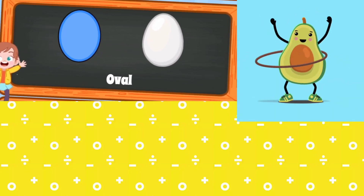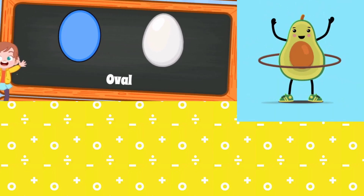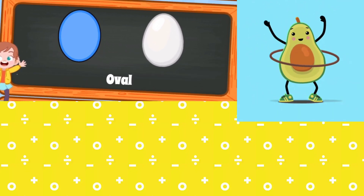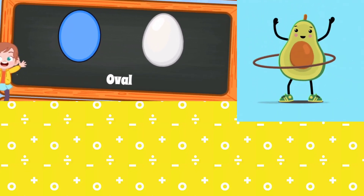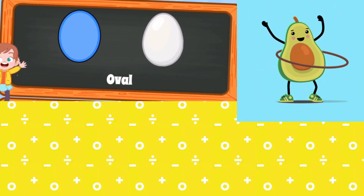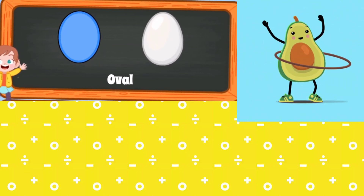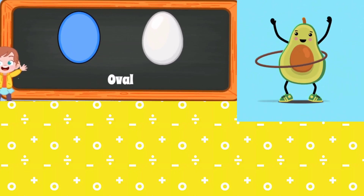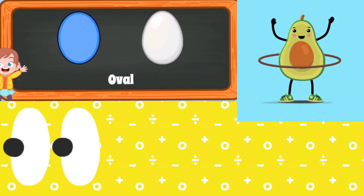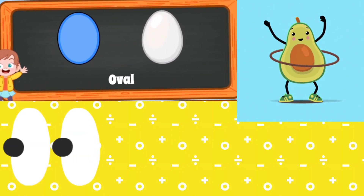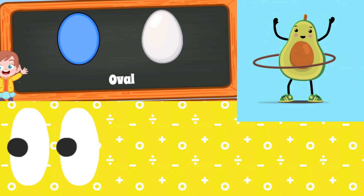This is an oval shape. Avocado is in oval shape. Our eyes are oval shape.